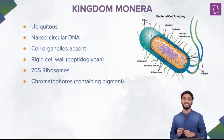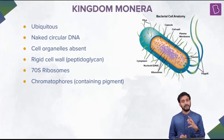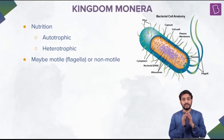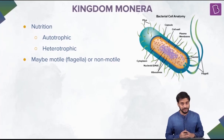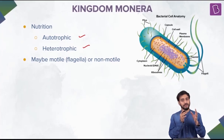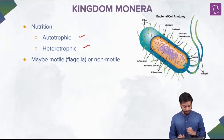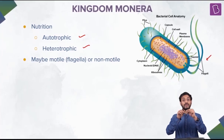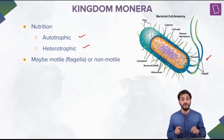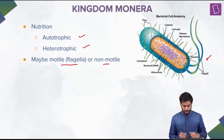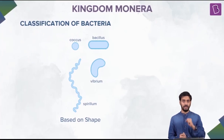They have pigments called chromatophores - we will talk about how these pigments provide color to these organisms. Regarding mode of nutrition, they have one of the most diverse varieties across all five kingdoms. They can be autotrophic - either photosynthetic or chemosynthetic - or heterotrophic, including saprophytic, symbiotic, or parasitic. Some bacteria have a whip-like structure called a flagellum which helps in movement, making them motile. Those without flagella are non-motile.